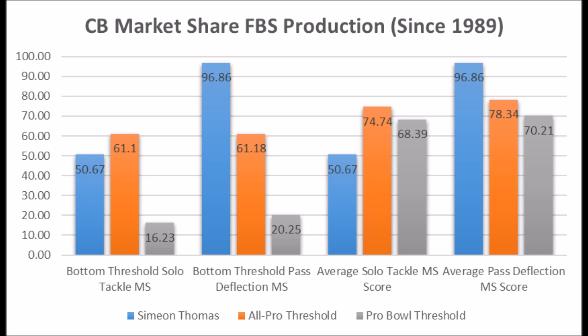The last pick is Simeon Thomas, defensive back out of Louisiana-Lafayette. His production data as a cornerback shows a 50.67 solo tackle score and 98.86 pass deflection score — very good pass deflection but some issues with solo tackle data. He did play safety last year and didn't complete athleticism testing, which makes projection very difficult. Because of the lack of athleticism testing, it's really hard to project him overall, so I'm going to leave him blank in terms of projection — there just isn't enough information to say either way, though as a cornerback he looked pretty decent.